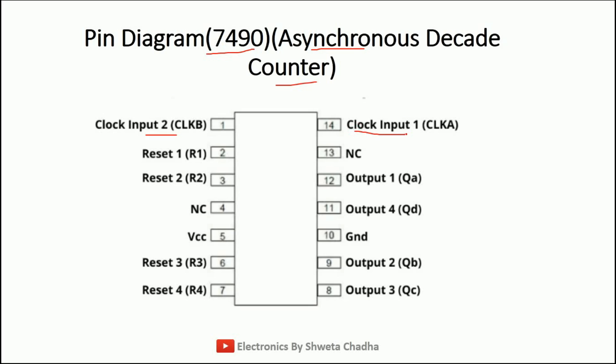Now let us discuss how we will be making the connections. PIN number 1 is clock 2, and since this is an asynchronous decade counter, the clock is just given to the first flip-flop. So the clock signal will be connected at PIN number 14. Whereas clock number 2 will be connected with PIN number 12 — that is QA, the output of the previous flip-flop. PINs 2 and 3 are reset PINs, hence connected with ground.